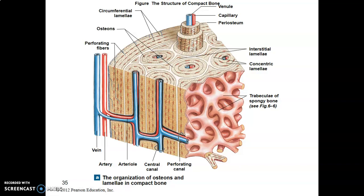The extracellular matrix has collagen type 3 fibers and ground substance, which has an organic and inorganic portion. The organic portion has proteoglycans and glycoproteins. The inorganic portion has calcium phosphate and hydroxyapatite, which is what makes bone hard. This leads us to the Haversian system, which forms the microscopic organization of compact bone.